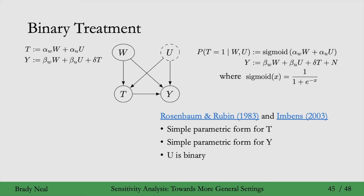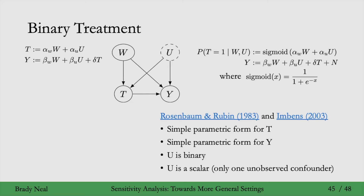And in those papers, U must be binary and U must be a scalar — you can't have more than one unobserved confounder. So these papers really aren't that general; it's just that they have a binary treatment setting.